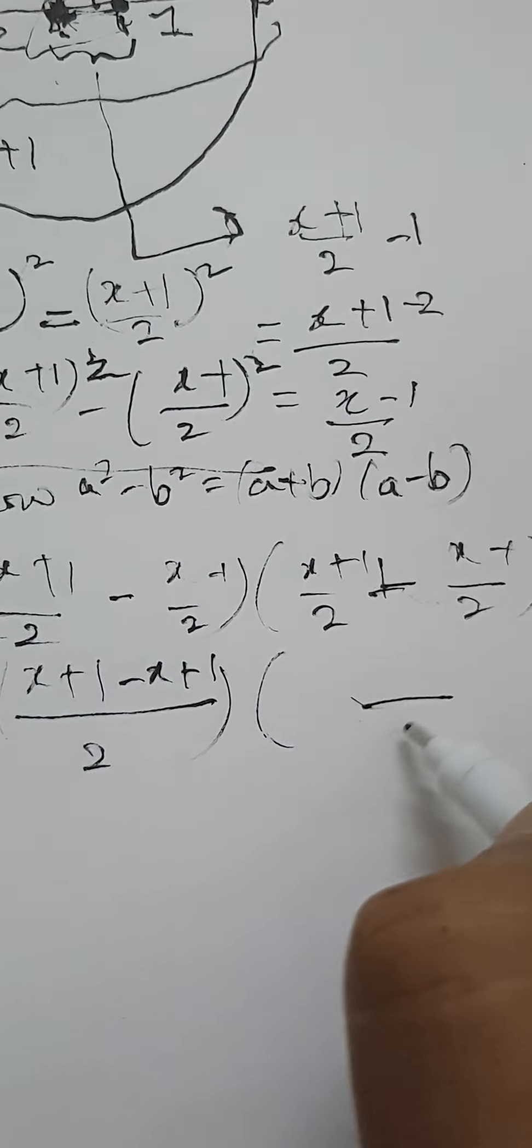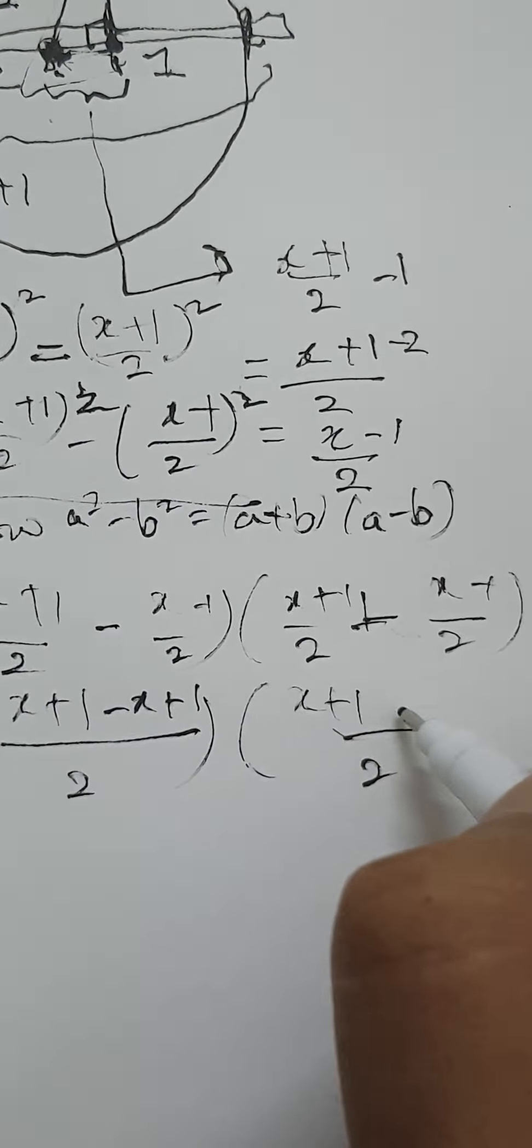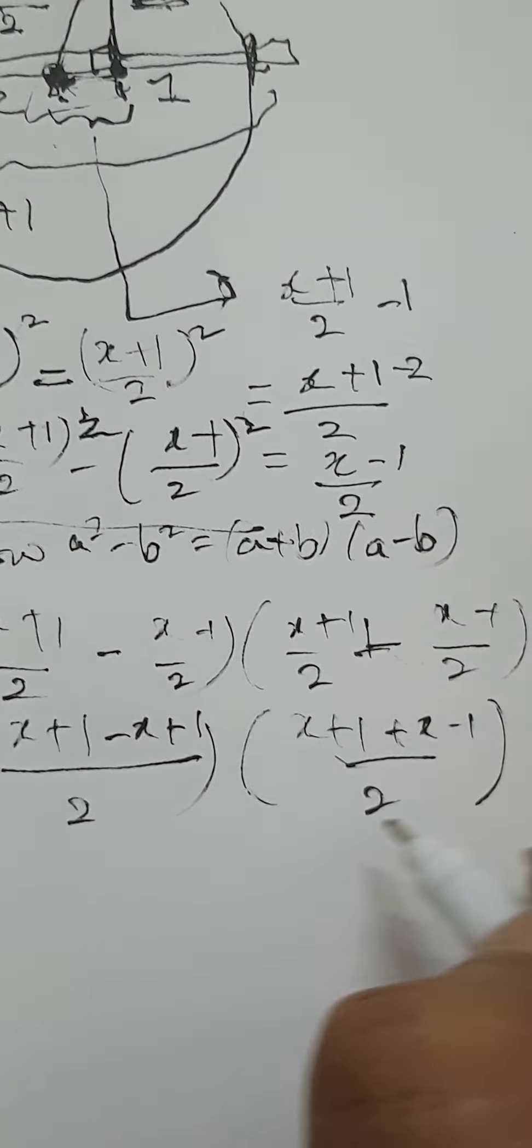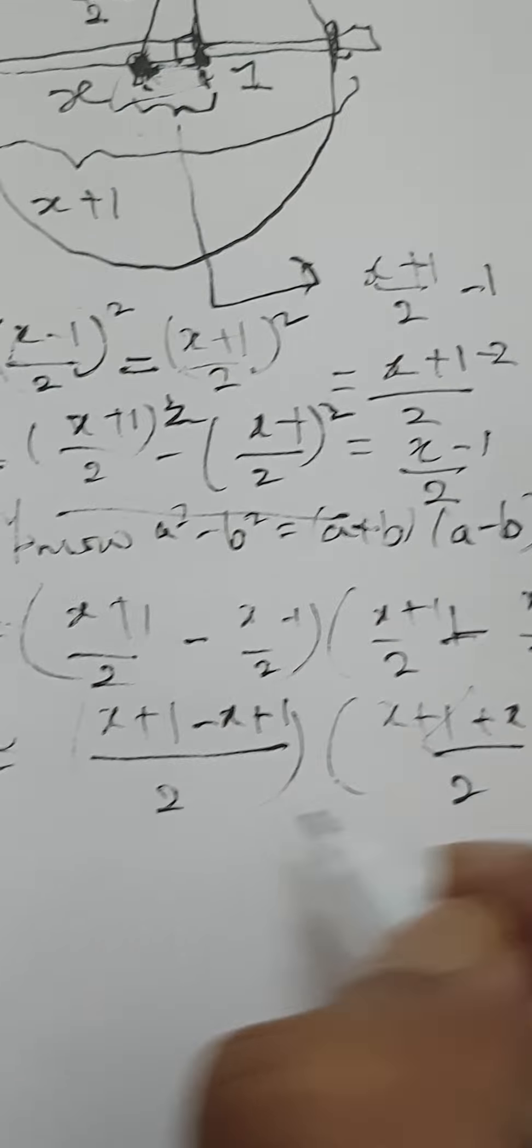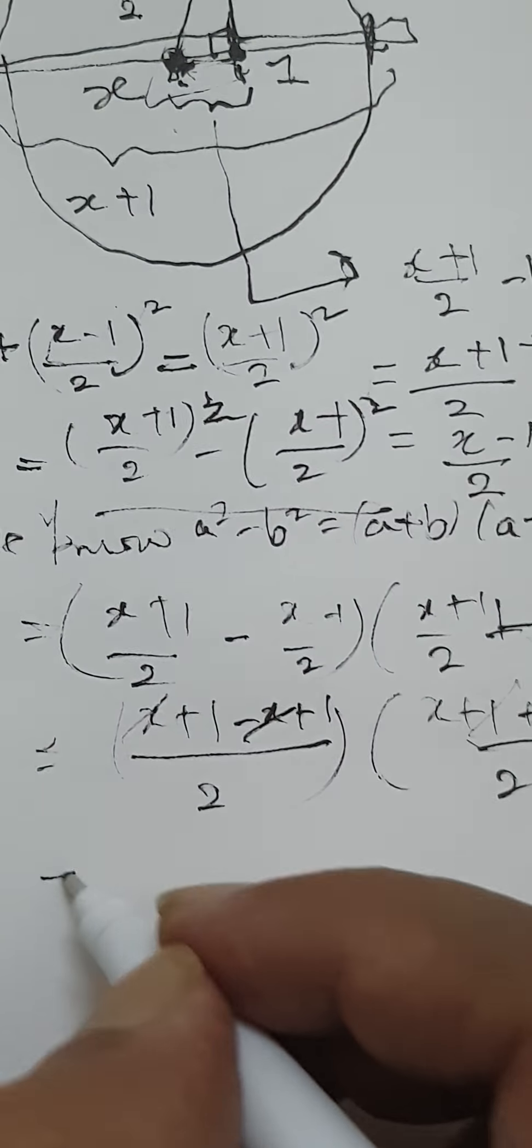So this gives us x plus 1 minus x plus 1. And this is x plus 1 plus x minus 1. So here, these two cancel out, and here, this cancels out.